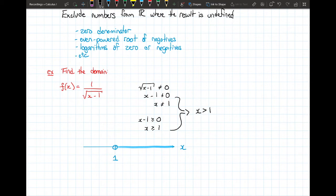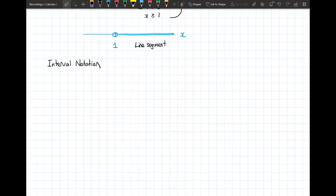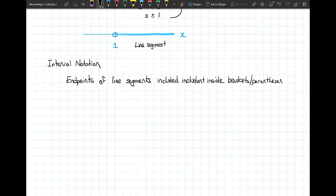This is a line segment, and that will help us form the basis of interval notation. In interval notation, we have line segments, and a line segment would have a start and an end. So we have end points of line segments, and these end points are included inside brackets or parentheses.